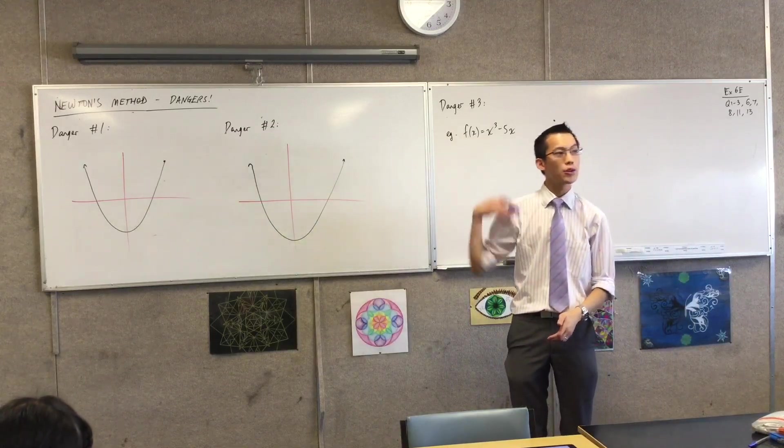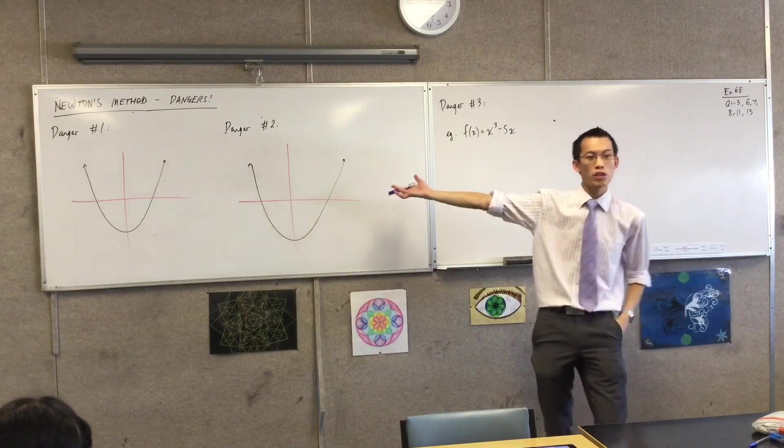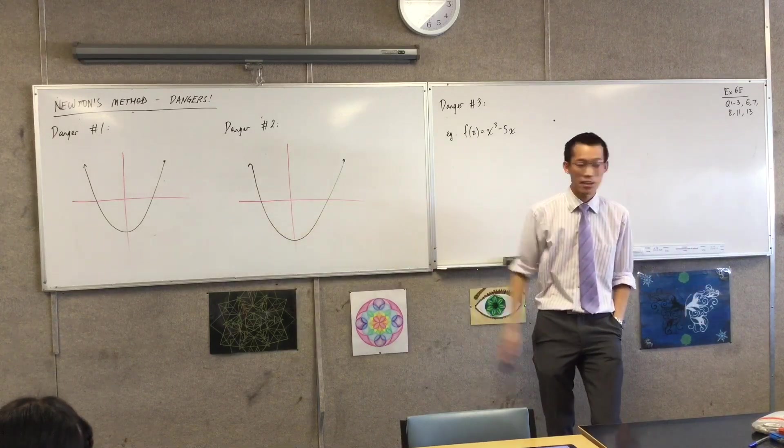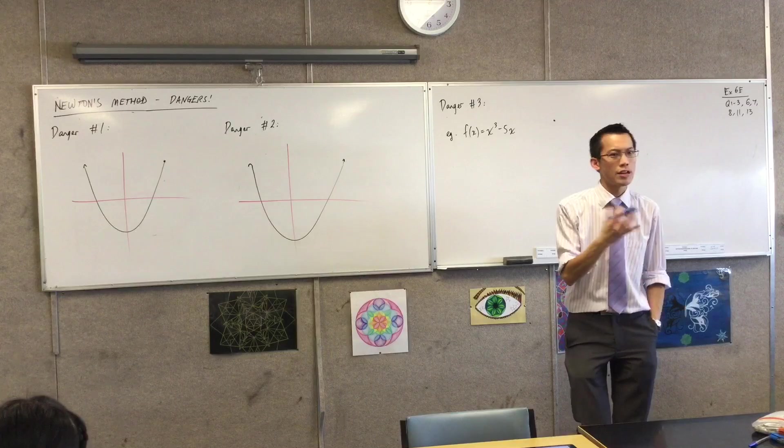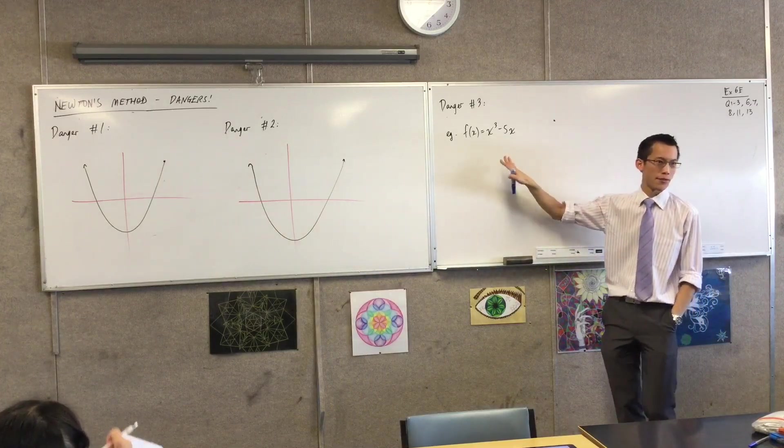For the first two dangers, I'm going to illustrate them, and I'm not going to go through the mechanics. I'm just going to illustrate them with the previous example we were doing, x squared minus 3, trying to find root 3. For my third danger, I will have to appeal to a different function. You'll see why shortly.